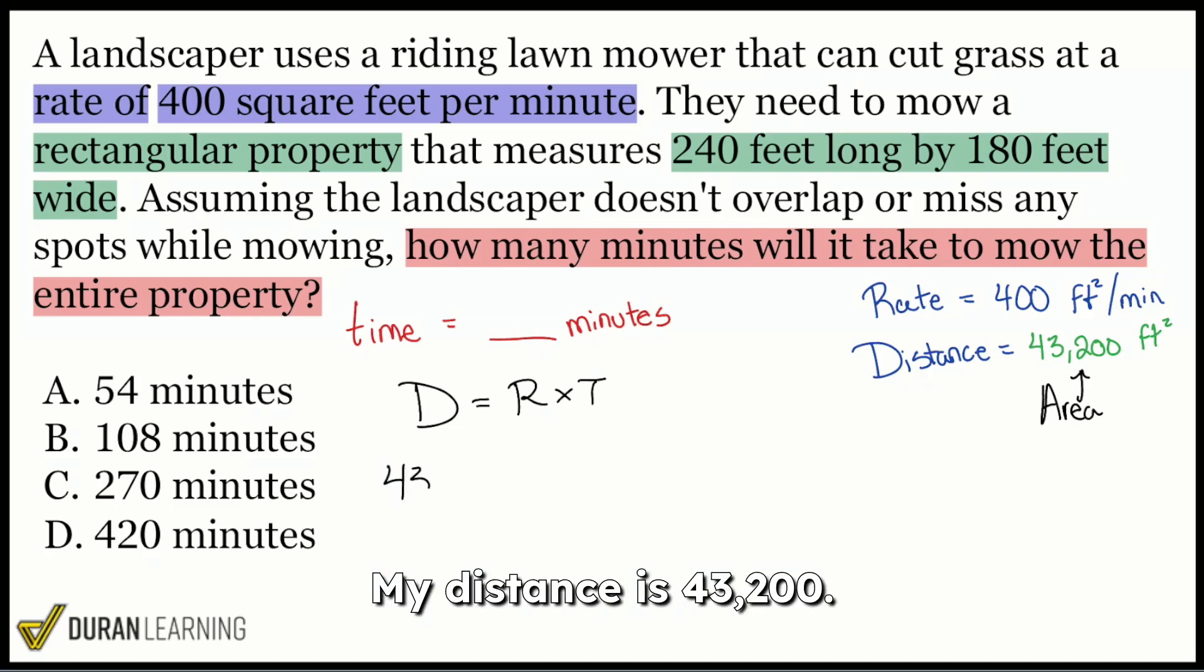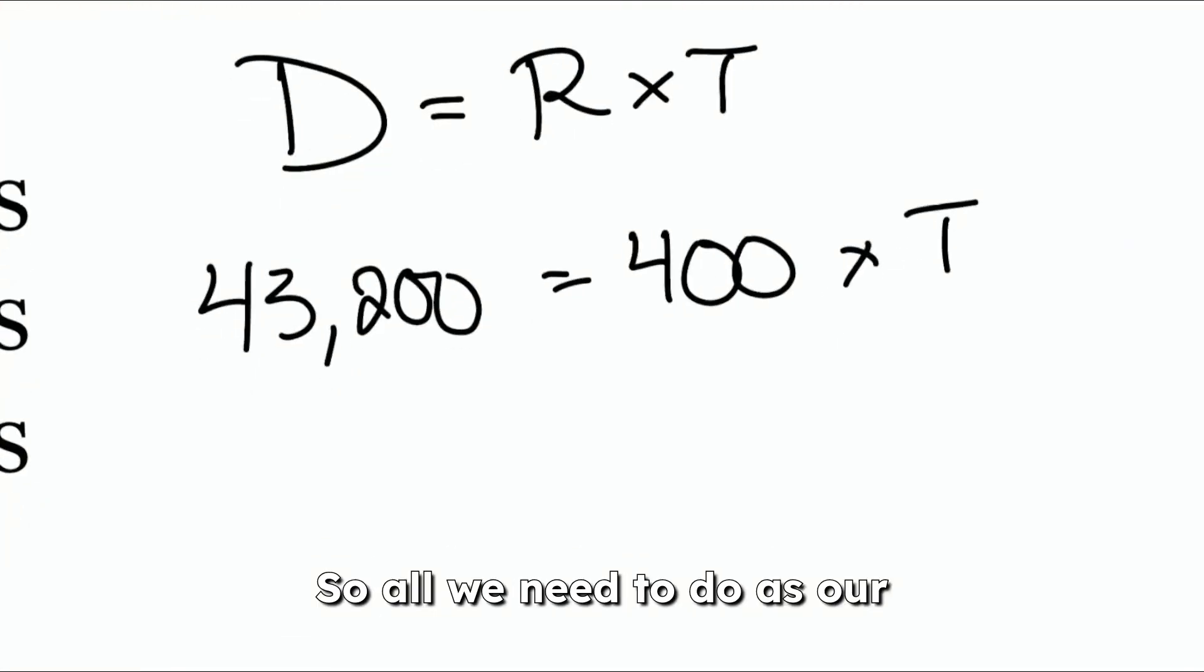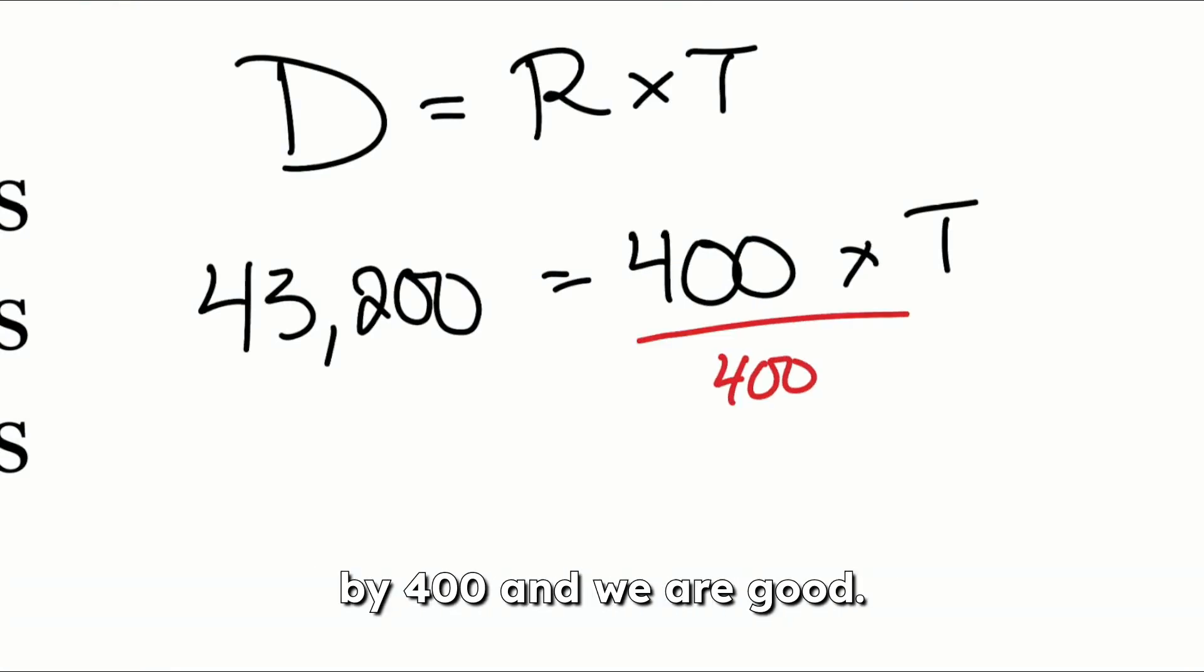Distance equals rate times time. My distance is 43,200. Our rate is 400 feet squared per minute multiplied by T, which will be the number of minutes. So all we need to do as our final step is divide both sides by 400, and we are good.